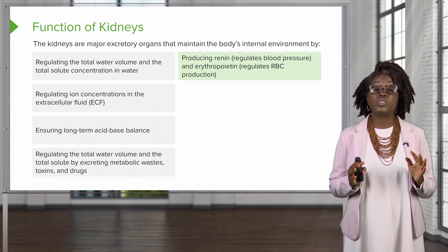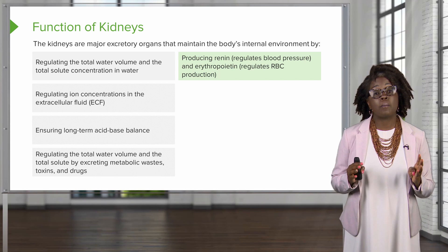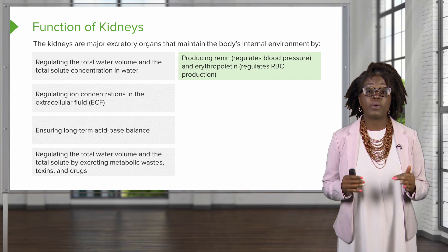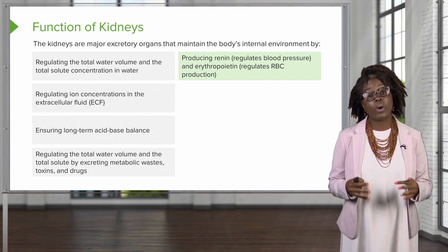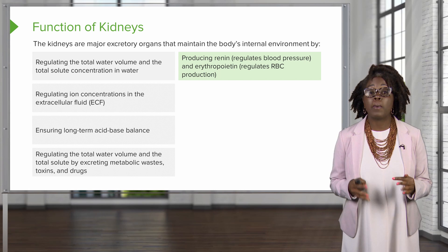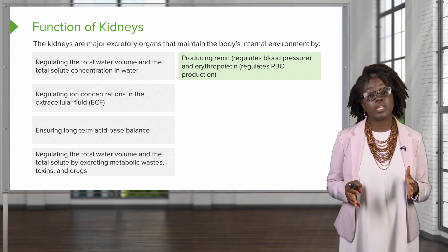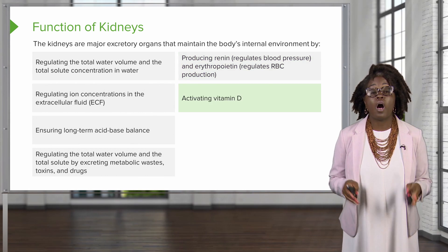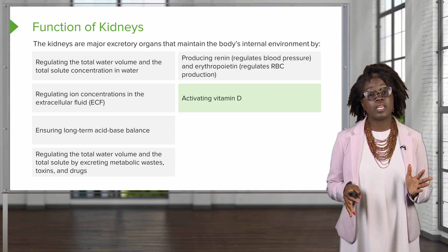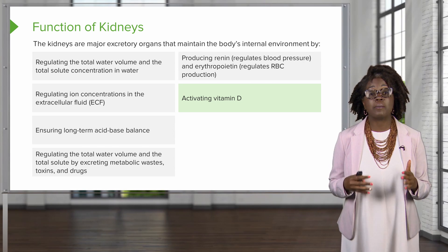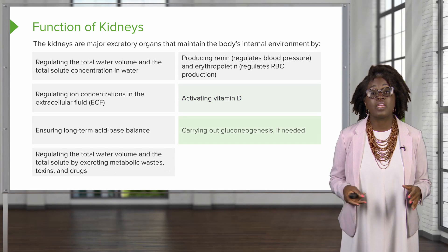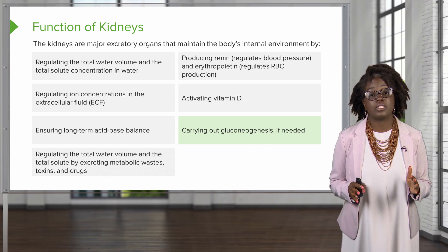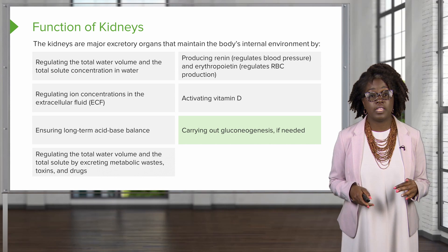The kidneys produce renin, which is a molecule that regulates blood pressure, and erythropoietin, a molecule that regulates red blood cell production. Also, in the kidneys, we activate vitamin D and carry out gluconeogenesis if needed.